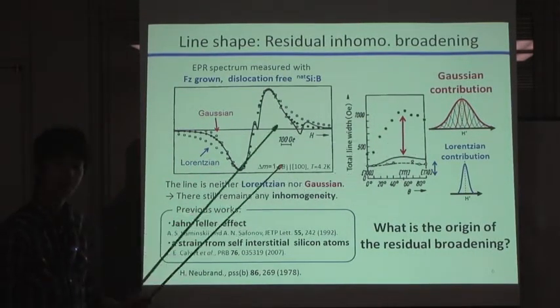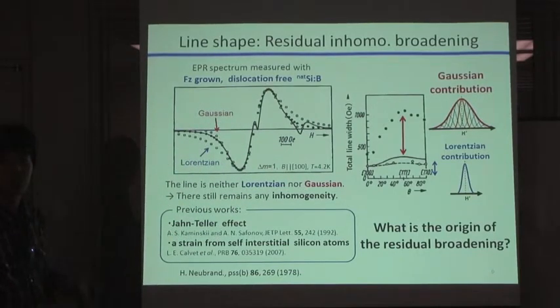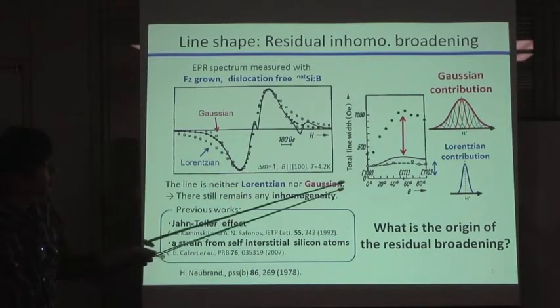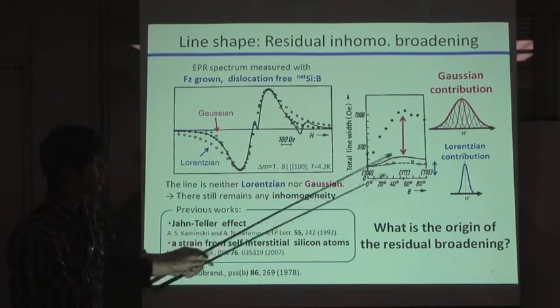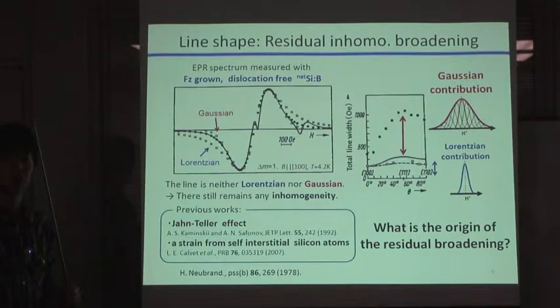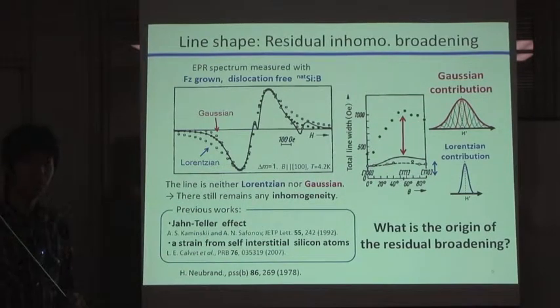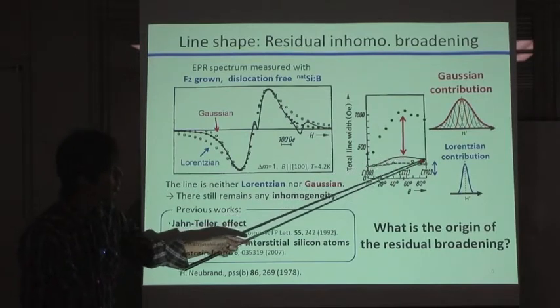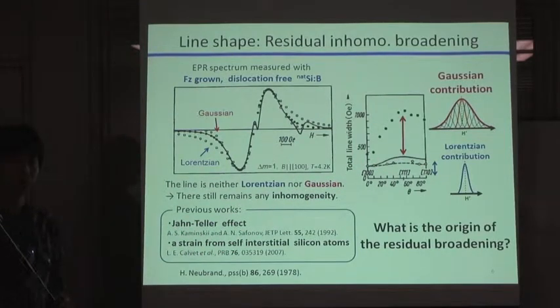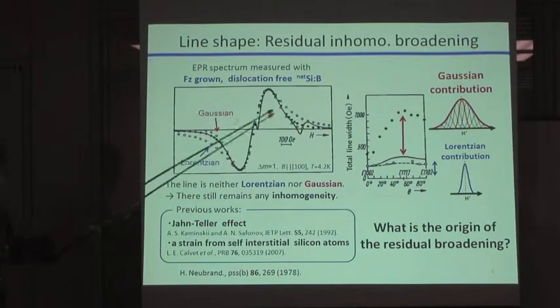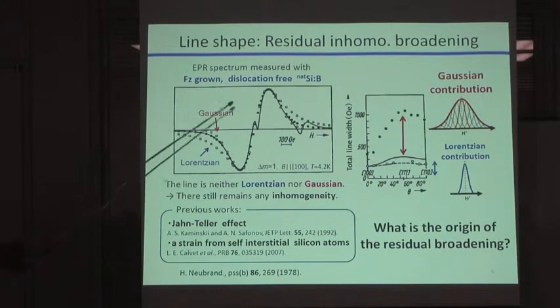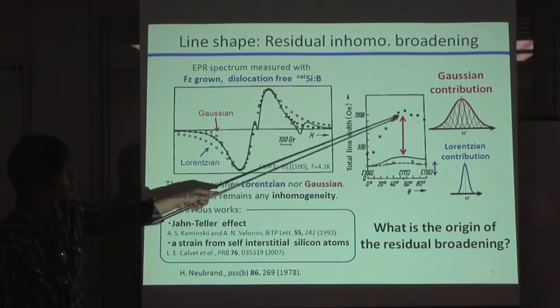This figure shows the angular dependence of the total line widths of this transition spectrum. In this figure, x-axis indicates the angle between magnetic fields and crystal axes. Black dot is actual experimental data, and solid line is a deconvoluted Lorentzian contribution by Voigt fitting. As you can see, experimental data cannot be fitted neither by Lorentzian nor Gaussian like this. And you can see large Gaussian contribution in all directions.